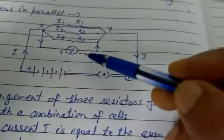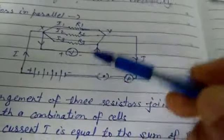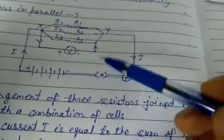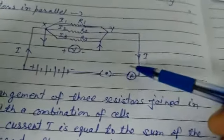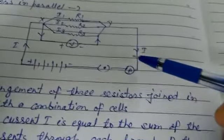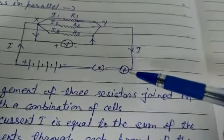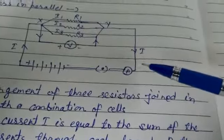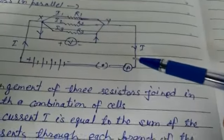A plug key and a meter. In parallel with the combination of resistors, it gives the potential difference V across the combination. The potential difference across each resistor is also V, so can be checked by connecting the voltmeter across each individual resistor.